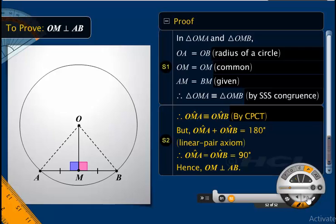But what is the sum of the two angles? The sum of angle OMA and angle OMB is equal to 180 degrees, because the two angles make a linear pair of angles. Therefore, both angles are equal to 90 degrees. That is, OM is perpendicular to AB. And thus, the converse of the theorem is proved.